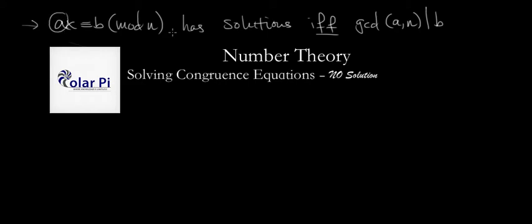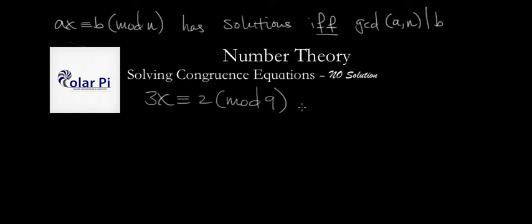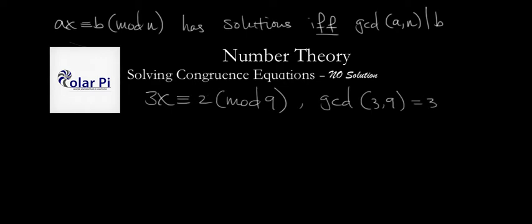Obviously, if the greatest common divisor of A and N does not divide B, then we have no solutions. So it's easy to see how we're going to construct an example. Here's one: 3x is congruent to 2 mod 9. This has no solutions, and the reason is because the greatest common divisor of 3 and 9, which is 3, does not divide 2.